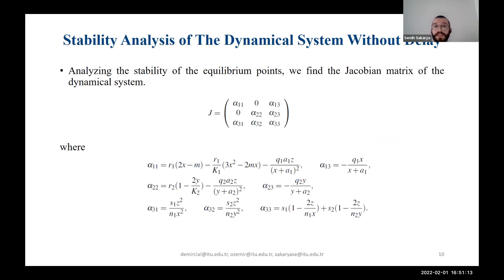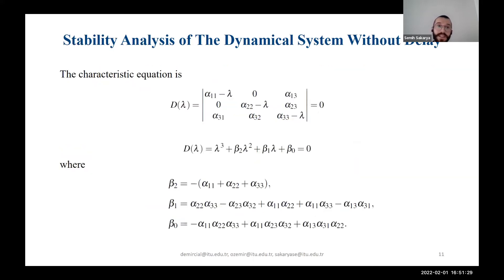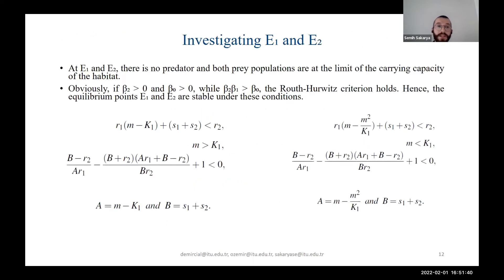To analyze the stability of these equilibrium points, we first find the Jacobian matrix of the dynamical system. We write the J matrix dependent on alphas, and by using that we establish our characteristic equation depending on betas. To decide stability, we substitute E1 and E3 separately into the characteristic equation.